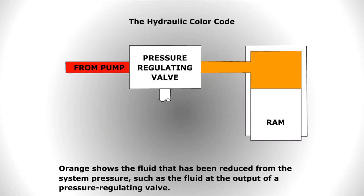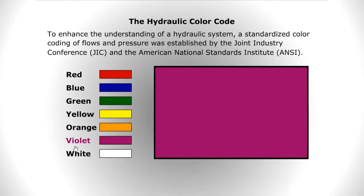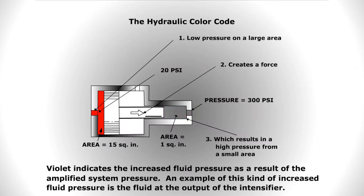Orange shows the fluid that has been reduced from the system pressure, such as the fluid at the output of a pressure regulating valve. Violet indicates the increased fluid pressure as a result of the amplified system pressure.